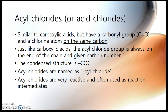Acyl chlorides, which are also known as acid chlorides in some textbooks, are very similar to and derived from carboxylic acids. Just like carboxylic acids, they have two different things connected to the one carbon — in this case, a carbonyl group and a chlorine atom. And just like carboxylic acid groups, the acyl chloride group is always on the end of the chain and is given carbon number one. We can use it in a condensed structural formula, showing it as COCl, usually on the end of the chain.